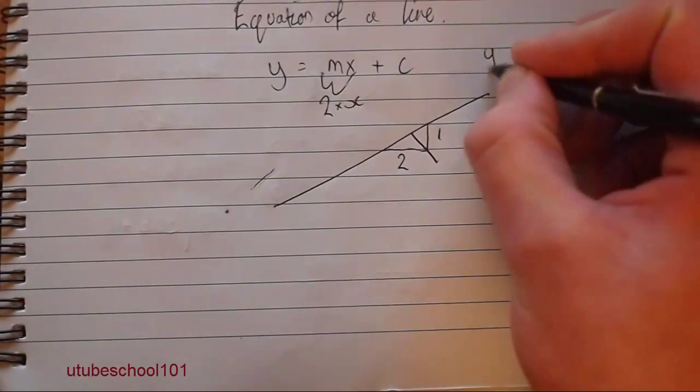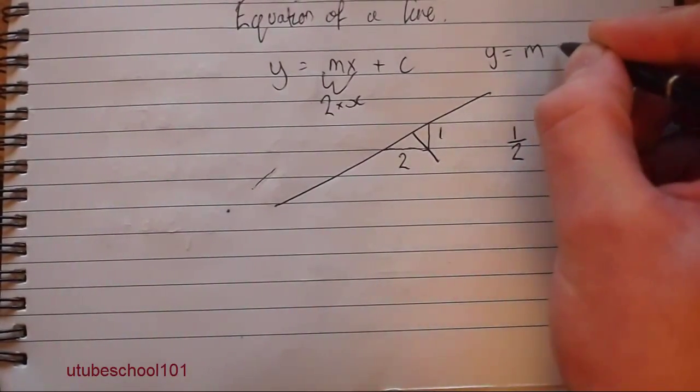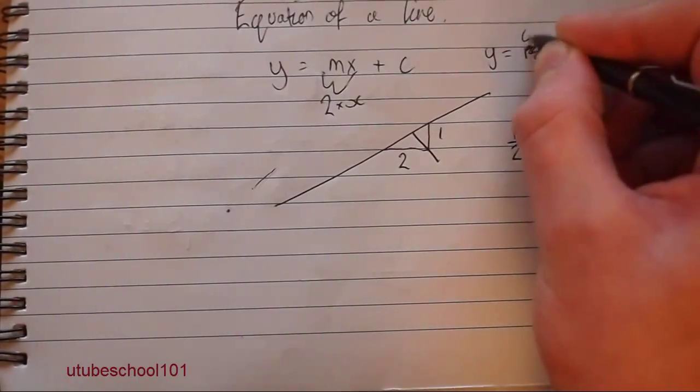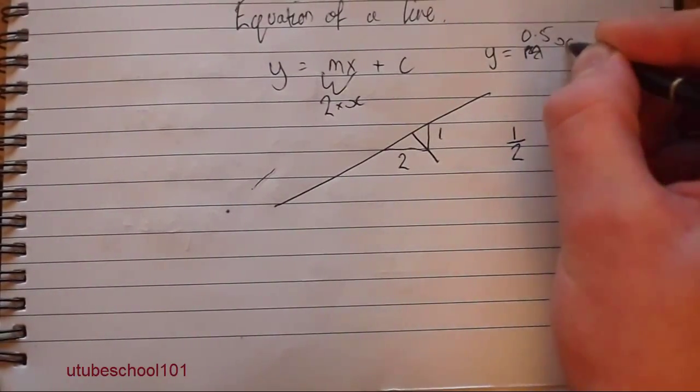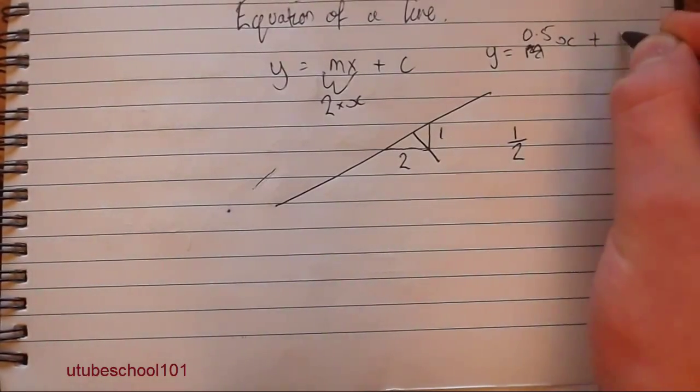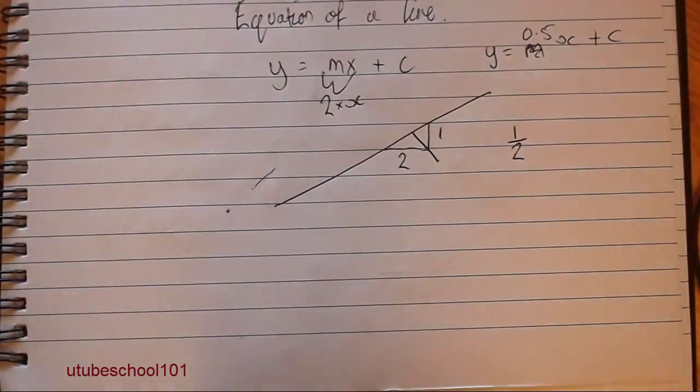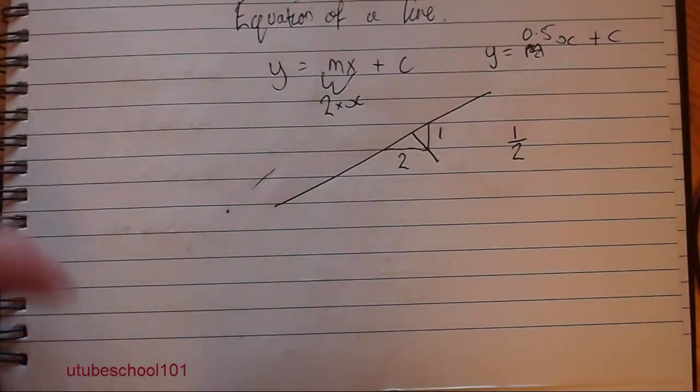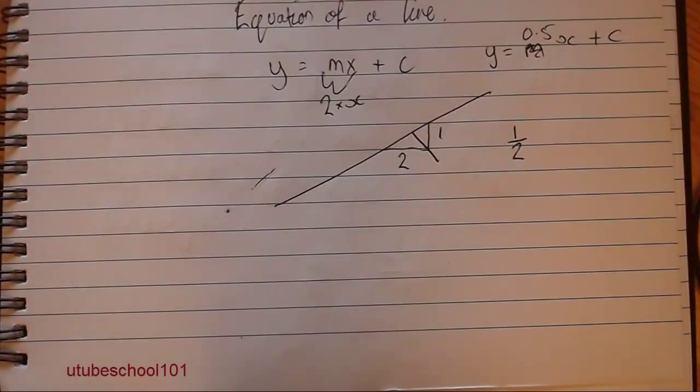So what you get is y equals m which is 0.5, so y equals 0.5x plus c. So now it's starting to look like a more normal equation with a more normal graph with easier numbers to work with.